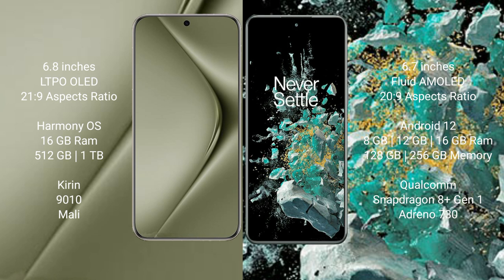Huawei Pura 70 Ultra runs on the HarmonyOS operating system. OnePlus 10T runs on the Android 12 operating system.